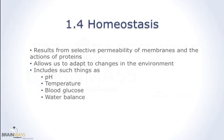Together, the phospholipid barrier function and the membrane transport function that comes from proteins allow cells to maintain a consistent internal environment — and that's basically the definition of homeostasis. A cell is able to maintain its internal contents within very strict limits, and that is what allows cells to live. Homeostasis includes everything: pH, temperature, blood glucose, water balance. Cells are actively regulating dozens of parameters in order to maintain their existence and adapt to their external environment.